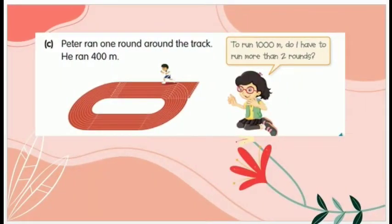Peter ran one round around the track, he ran 400 meter. To run one thousand meter, do I have to run more than two rounds? Peter berlari satu putaran yaitu 400 meter. Jadi untuk mencapai 1000 meter, Peter perlu berlari lebih dari dua putaran karena satu putarannya adalah 400 meter dan Peter sudah berlari 400 meter.